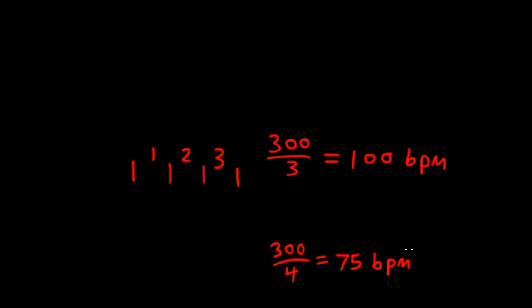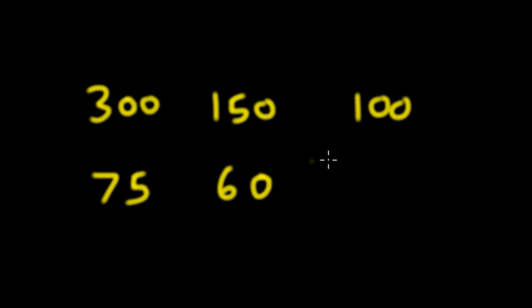So an easy way to figure out the heart rate is to simply memorize the numbers 300, 150, 100, 75, 60, 50. These numbers are derived from taking the number 300 and dividing it by 1, 2, 3, 4, 5, and 6 large boxes.